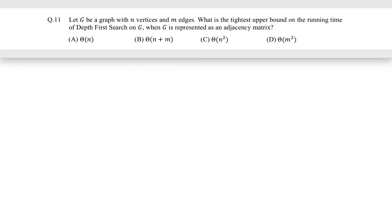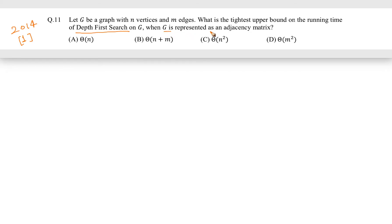Let us see this question. This question came in GATE 2014 for one mark. The question is: let G be a graph with n vertices and m edges. What is the tightest upper bound on the running time of depth first search, DFS, on G? The given condition is that the representation of G is as an adjacency matrix.